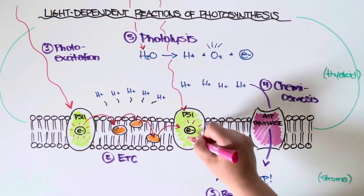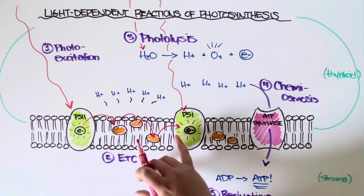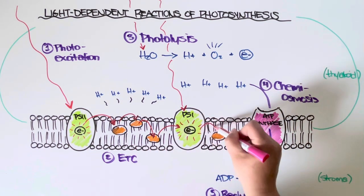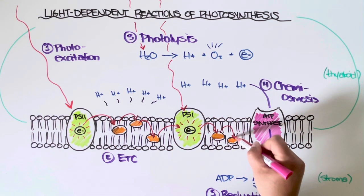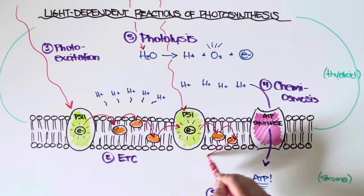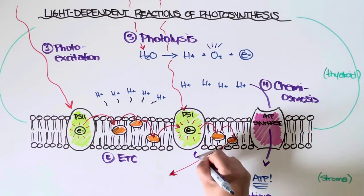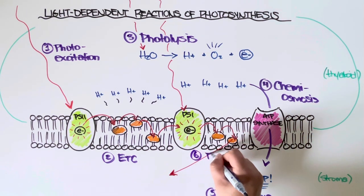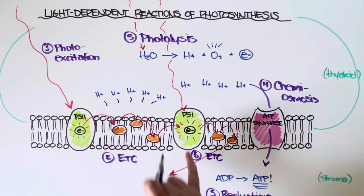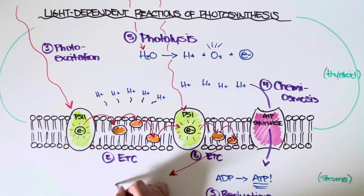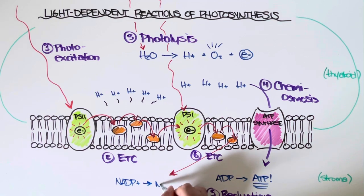That electron now is re-energized, and then it is passed down a second set of proteins in the thylakoid membrane. This is going to be our sixth step, which is a second electron transport chain. And as that electron is passed down those proteins, it will then eventually help to facilitate another reduction reaction, this time converting NADP plus in the stroma to NADPH.